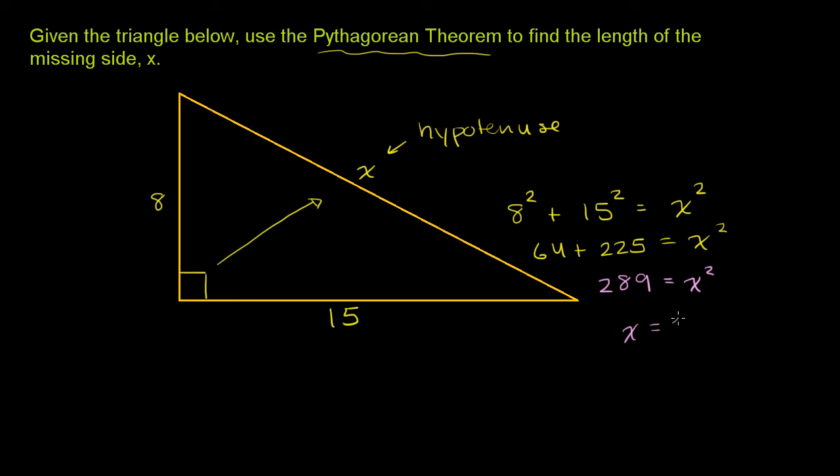x is equal to the principal square root of 289. You may or may not already know this, but this is 17 times 17, or 17 squared. So x equals 17.